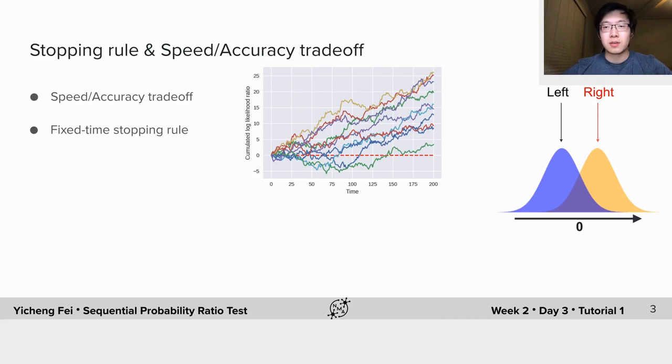This is called the fixed time stopping rule. Or if we care more about making accurate decisions rather than fast ones, we could set a threshold of evidence and keep making measurements until we've gathered enough evidence. Whichever stopping rule we choose, there is always the speed accuracy trade-off.